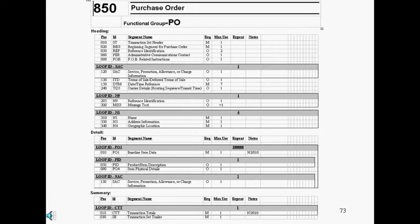Even when using the same versions of transaction sets, there are still differences in how companies would use them. For example, some data segments and elements may be omitted, or the number of times a loop can be used is limited, or some code values of an element restricted. All these rules would be noted in an EDI implementation guideline. Here is an example of an 850 transaction set guideline for a particular company. Note that only the segments being used in the transaction set are displayed, and in the required column, a data segment that must be used is indicated with an M for mandatory. An O indicates that the segment is optional.